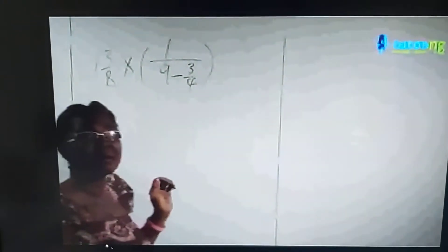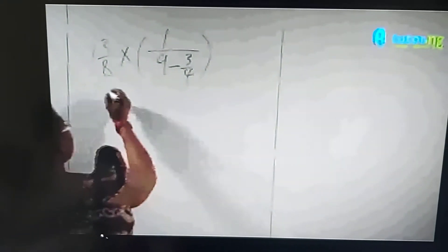We start by changing to improper fractions. Eight times one is eight, plus three equals eleven, so 1 3/8 becomes 11/8. Keeping the brackets, we now have 11/8 times one over nine minus three quarters.